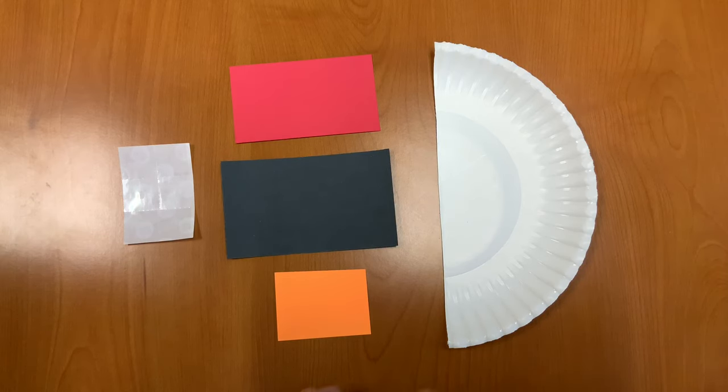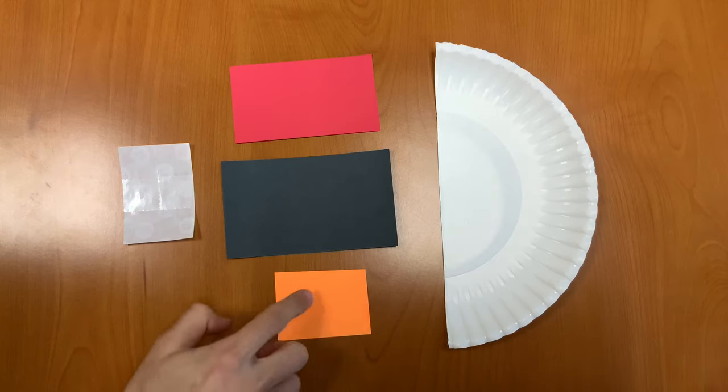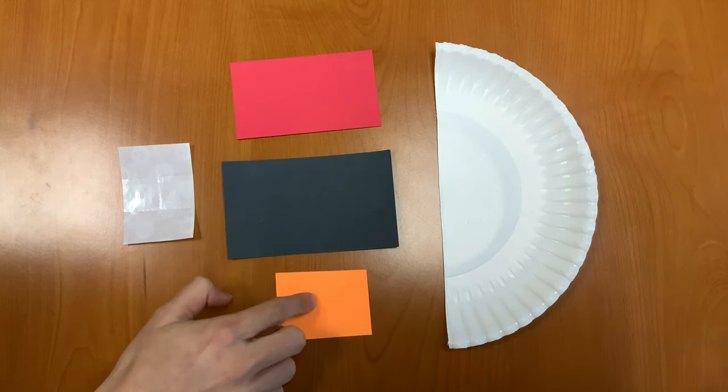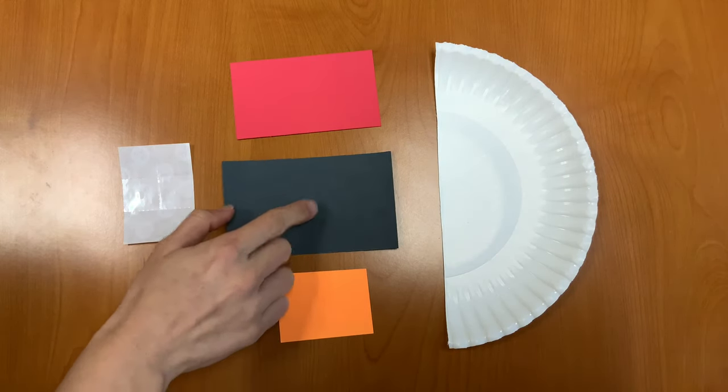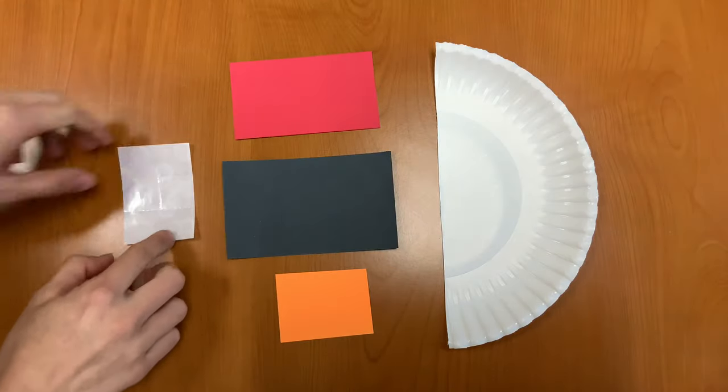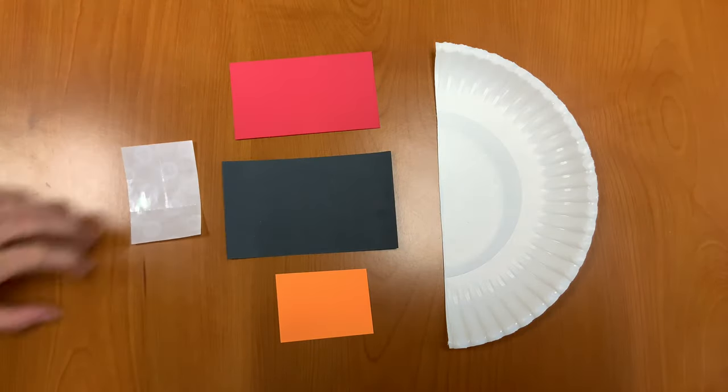In your take-and-make kit you should have half of a paper plate, three pieces of different colored construction paper - orange, black, and you'll have red or green - and six glue dots. Let's get started.